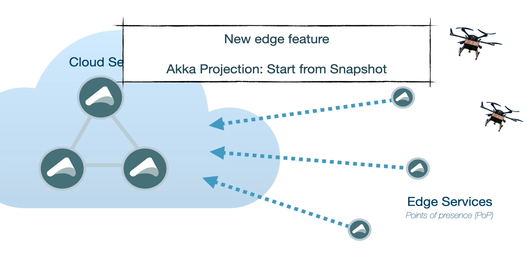The third new edge feature is start from snapshot support in ACCA Projections. Imagine that an edge node is disconnected from the cloud for a period of time — the drones will still be able to talk to the local point of presence; it doesn't rely on the cloud connection. When the connection is reinstated, the cloud is not really interested in the full history of coordinate changes from the drones. It would rather just have the latest position. Start from snapshot allows for this. An event-sourced entity has an optimization to store a snapshot. We store the coarse-grained snapshots in the database, and when the projection starts, it will start from the latest snapshot on every drone rather than replaying all events persisted since it was last connected.